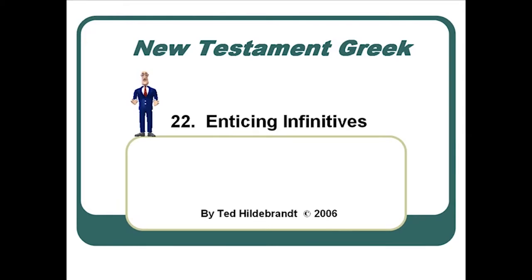Welcome to Chapter 22: Enticing Infinitives. So far we've looked at the indicative verb and its present, imperfect, future, aorist, and perfect and pluperfect forms in the indicative. Then we switched over to the participles — the present, the aorist, and the perfect participles. Now there's one other verbal type we need to master before we jump into the subjunctive and imperative moods, and that is the infinitive.